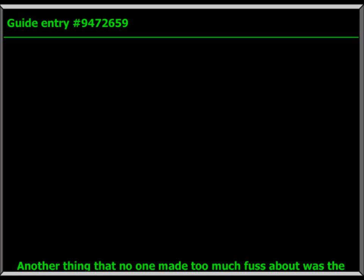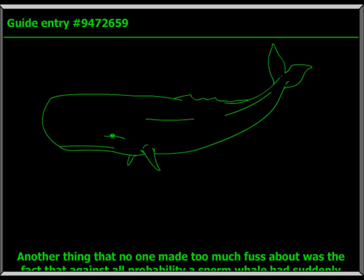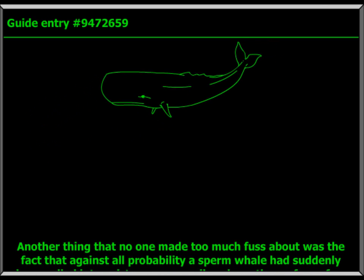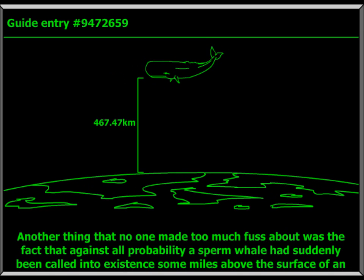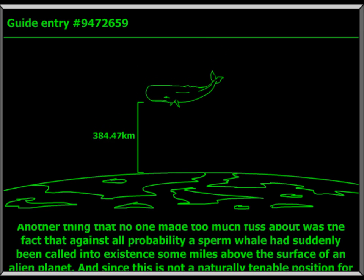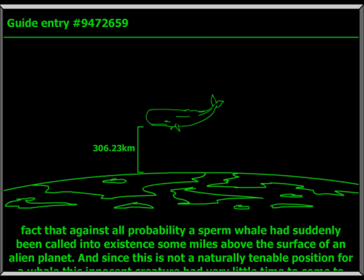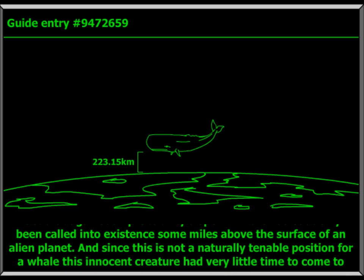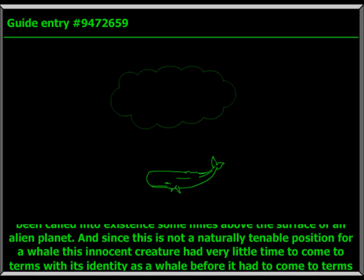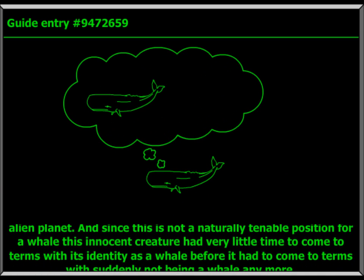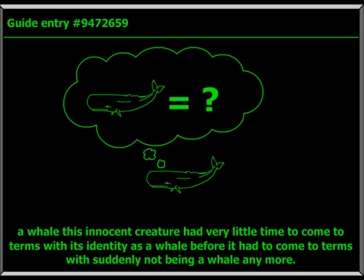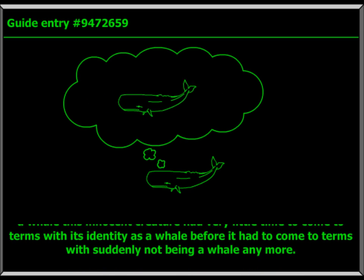Another thing that no one made too much fuss about was the fact that against all probability, a sperm whale had suddenly been called into existence some miles above the surface of an alien planet. And since this is not a naturally tenable position for a whale, this innocent creature had very little time to come to terms with its identity as a whale before it had to come to terms with suddenly not being a whale anymore.